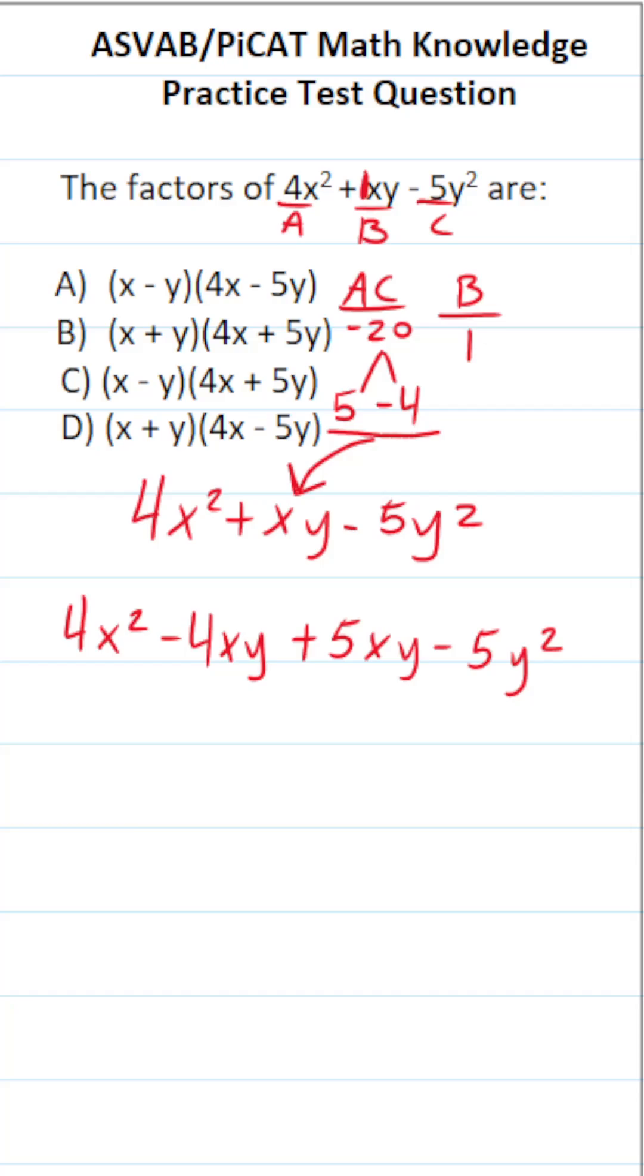Now, when we factor by grouping, we focus on these two at a time. So I'm going to look at 4x squared minus 4xy. Then after that, I'm going to try to factor something out of 5xy minus 5y squared. So what can I factor from 4x squared minus 4xy?